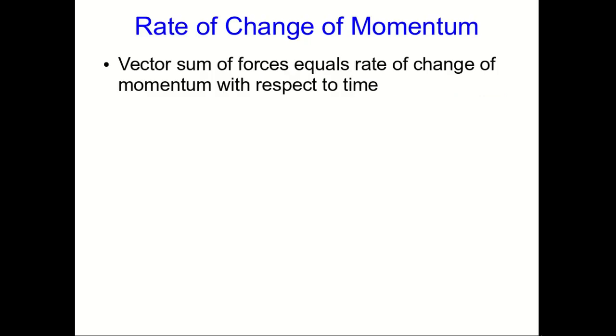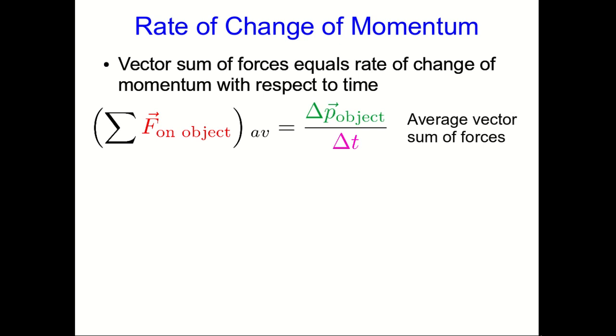We know that the vector sum of forces is the time rate of change of momentum, and I've been writing that as Δp/Δt, but of course that's an average time rate of change of momentum, and so rather awkwardly I then have to write that it's the average vector sum of the forces.